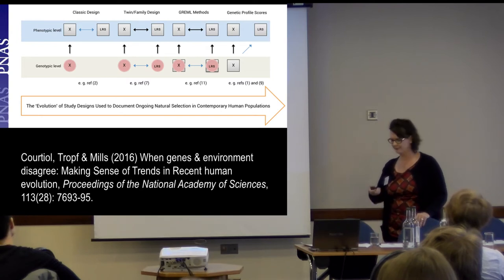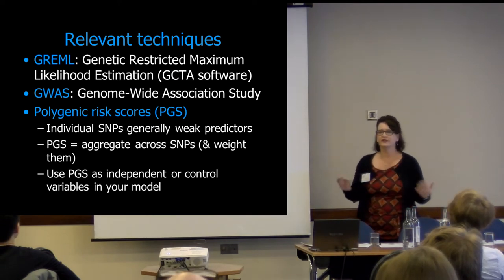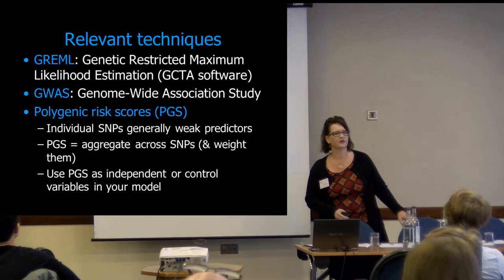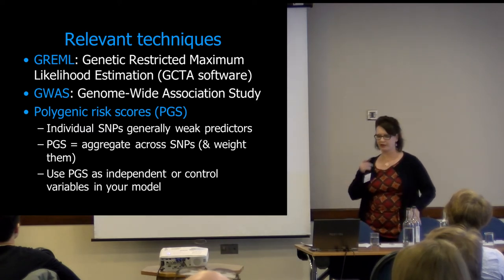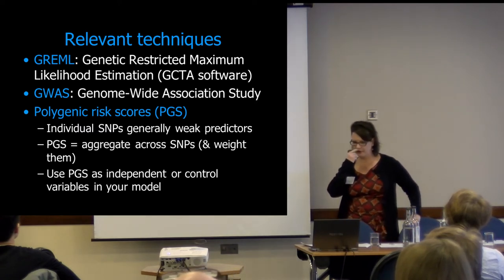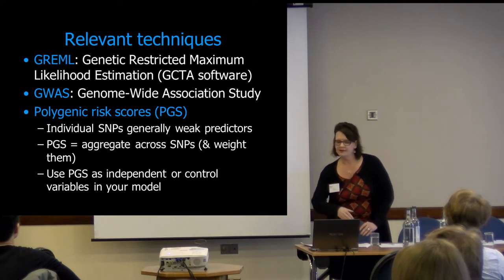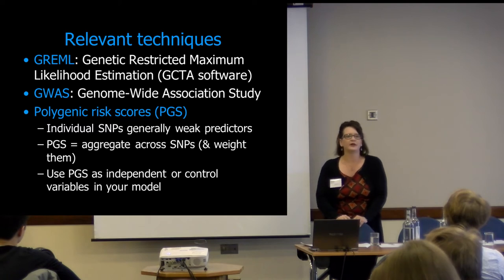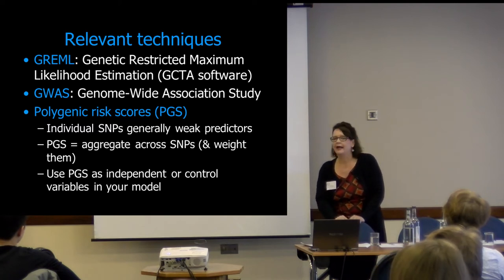I'm going to move now to talk about GREML methods and polygenic scores from genome-wide association studies. GREML — a genetic restricted maximum likelihood estimator, done in an R package called GCTA — instead of using twin data comparing monozygotic to dizygotic twins, allows you to look at unrelated individuals in a dataset to see how much they might be related. So you and I might be 55% related, or 30% related — and then you look at that variation across everyone in the same dataset.